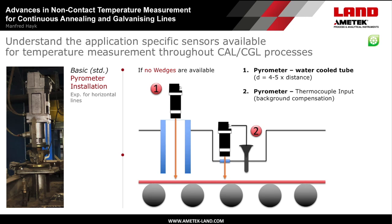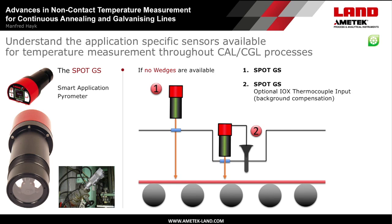Usually these instruments are equipped with water-cooled sighting tubes to prevent most of the hot reflections from the furnace background onto the strip surface. Another possibility is to use an existing thermocouple mounting near the pyrometer, which gives a background temperature reading to the pyrometer to correct the effect of background radiation. With the new smart SpotGS application pyrometer, you can now use only the pyrometer without a water-cooled sighting tube. Even if the strip surface emissivity changes, the smart application pyrometer adjusts the right parameters to get a most accurate temperature measurement within a few milliseconds.